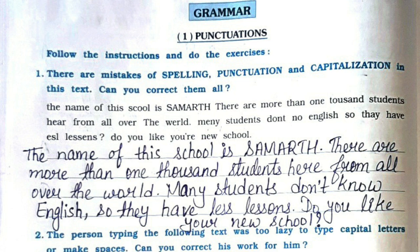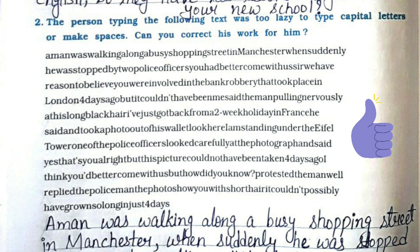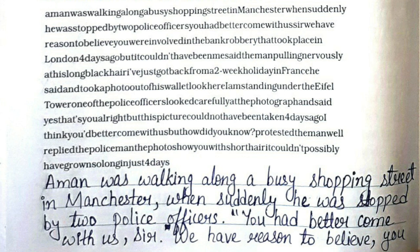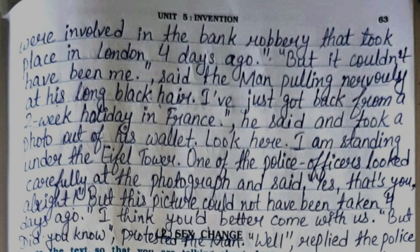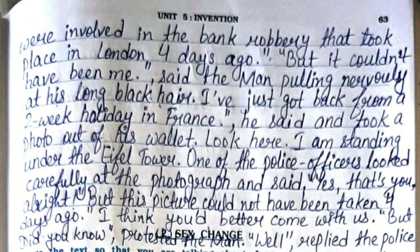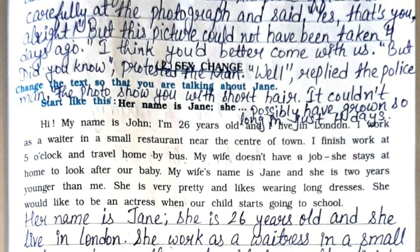Now the grammar part. Firstly we'll see punctuations. Question number one: there are mistakes of spelling, punctuation, and capitalization in the text — can you correct them all? You can see the paragraph and complete it in your workbook. The second one: the person typing the following text was too lazy to type capital letters or make spaces — can you correct his work? You can see the complete paragraph; I have already corrected all the mistakes, given spaces, capital letters, and punctuation marks. You can complete it in your workbook.